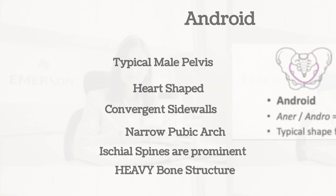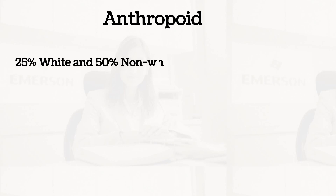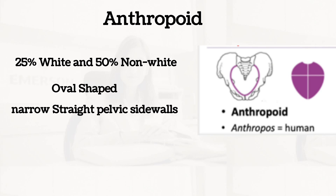The anthropoid pelvis is found in about 25% of white women and 50% of non-white women. The pelvic brim is oval-shaped — you can imagine an upright egg. The side walls are straight, but compared to the gynecoid, they are a little bit narrow.